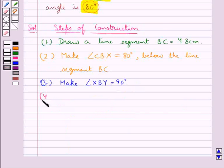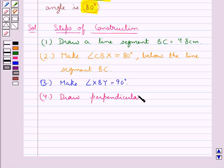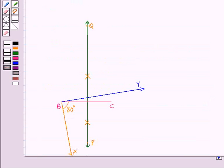Now in the next step we draw the perpendicular bisector PQ of BC. This PQ is the perpendicular bisector of BC such that PQ intersects BY say at point O.